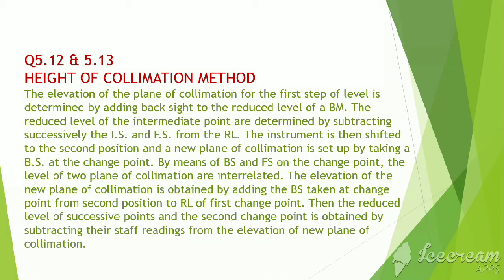The instrument is then shifted to the second position and a new plane of collimation is set up by taking a BS at the change point. By means of backside and foresight on the change point, the level of two planes of collimation are interrelated. The elevation of the new plane of collimation is obtained by adding the backside taken at change point from second position to RL of the first change point. Then the reduced level of successive points and the second change point is obtained by subtracting their staff readings from the elevation of new plane of collimation.